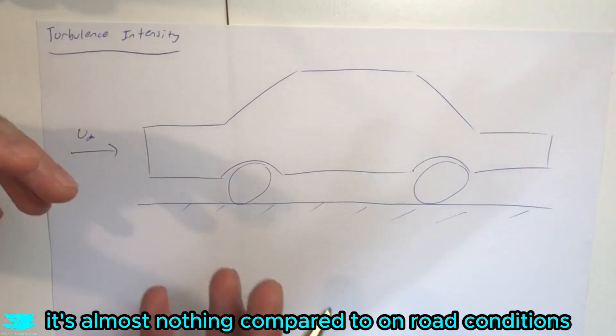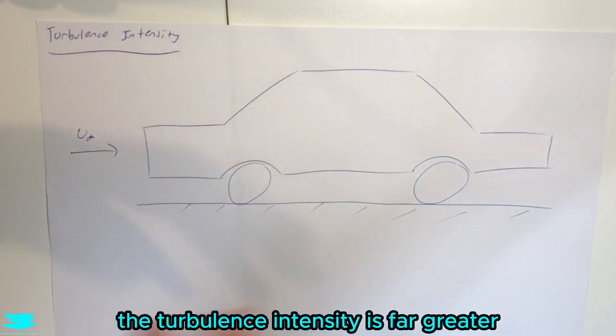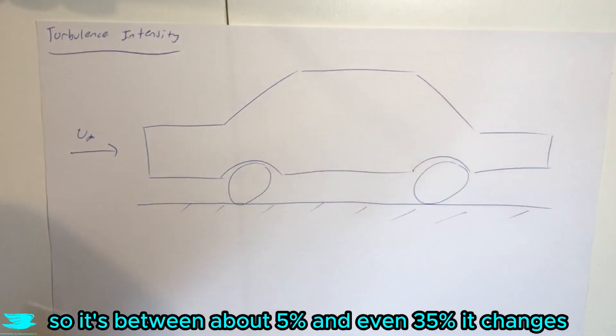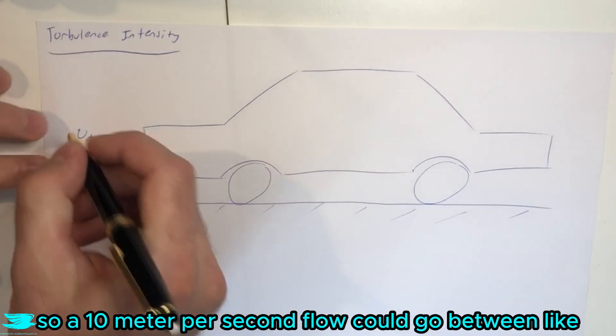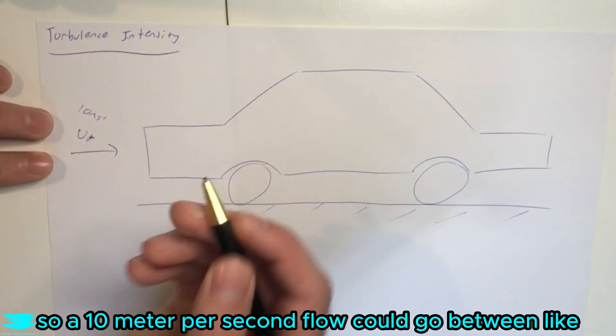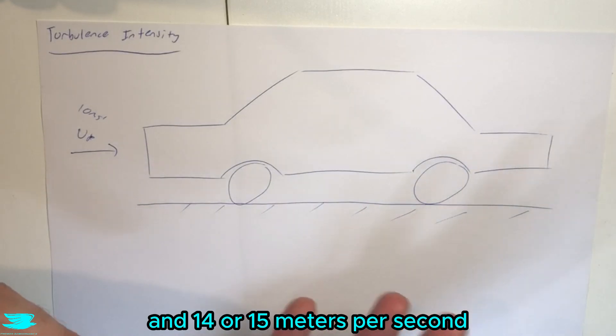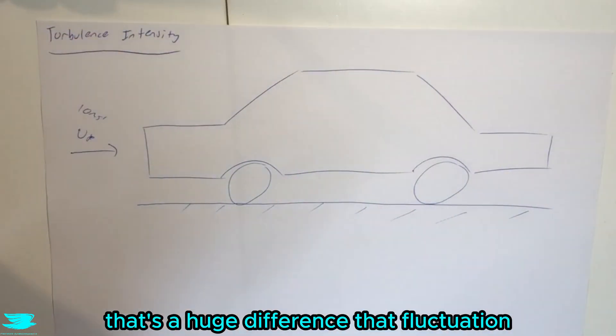Compared to on-road conditions, the turbulence intensity is far greater. So it's between about 5% and even 35% changes. So a 10 meter per second flow could go between like 5 meters per second or 6 meters per second and 14 or 15 meters per second. That's a huge difference, that fluctuation.